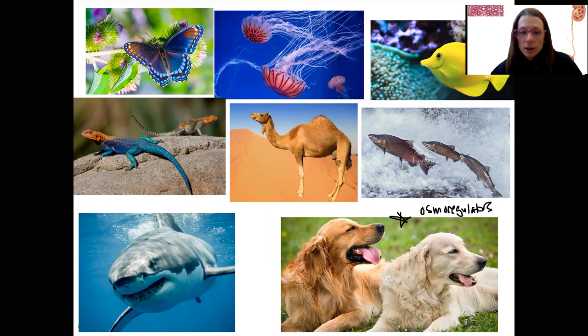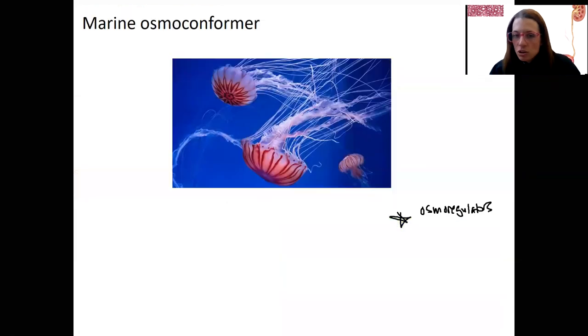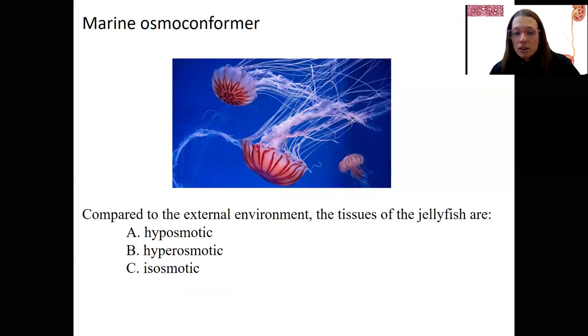There are other species, so jellyfish that are osmoconformers. So they do not, they conform to their external environment. Let's actually look at them quick. So here are what's called a marine osmoconformer. Compared to the external environment, what are the tissues of this jellyfish? If it's a conformer, it's going to conform to the outside environment. The outside environment is very salty. This is a marine organism. These tissues of these cells, of these organisms, have the same concentration of solutes outside as inside. So that's isoosmotic. It's not necessarily the same solutes, just like with humans.